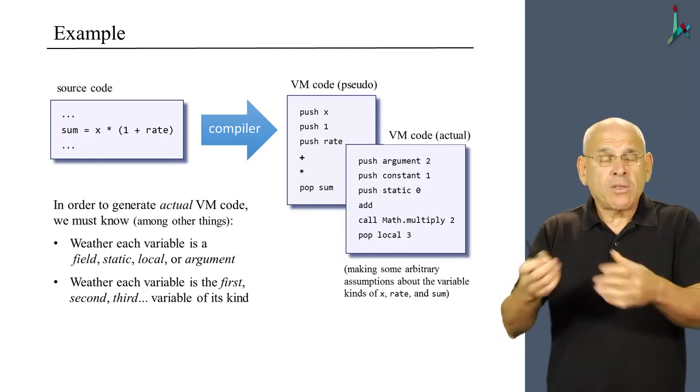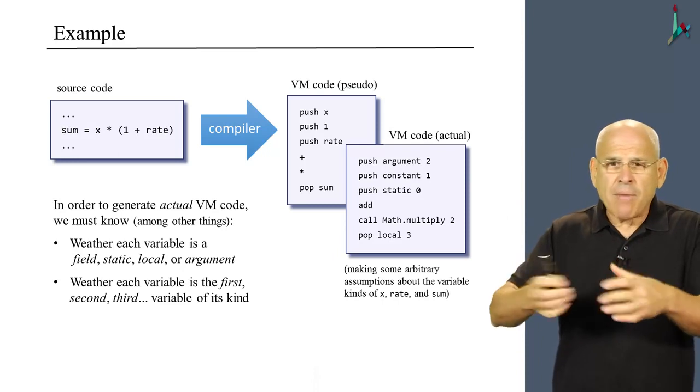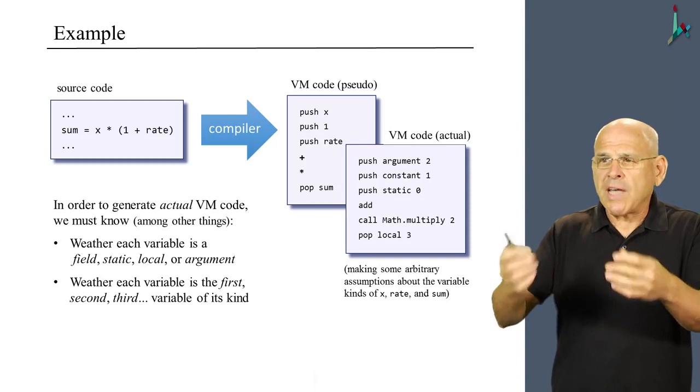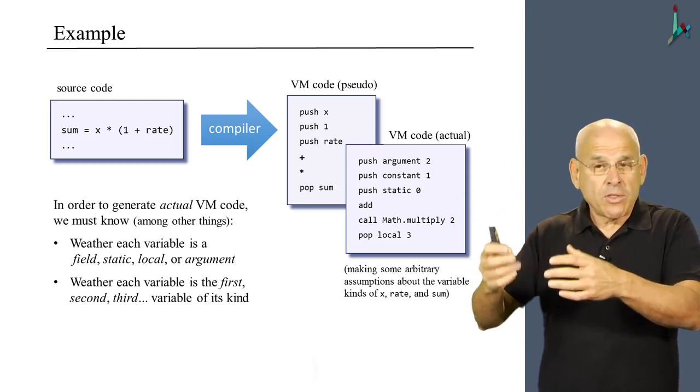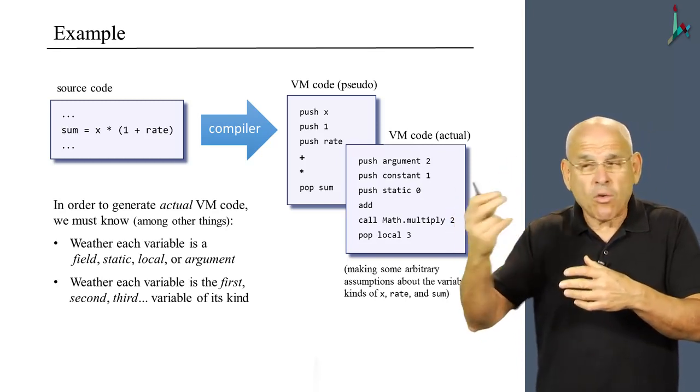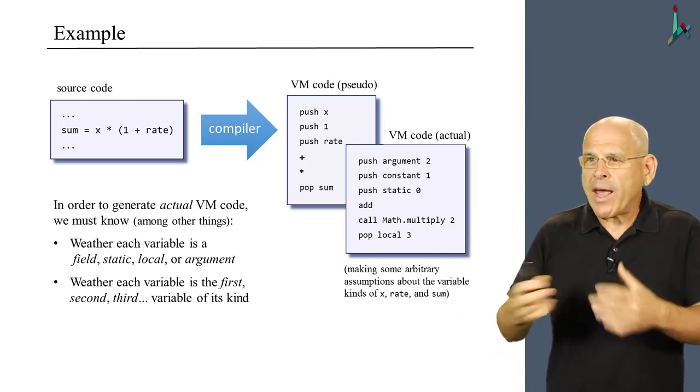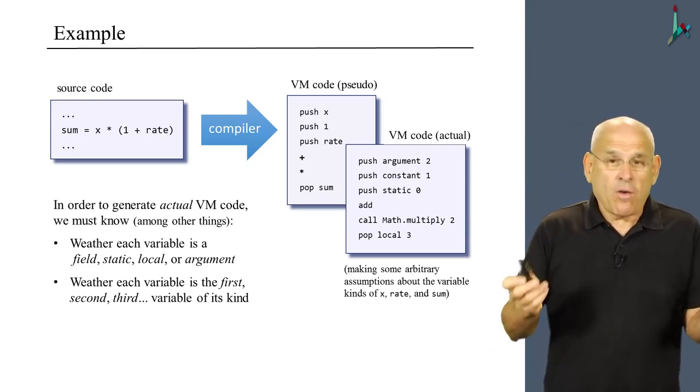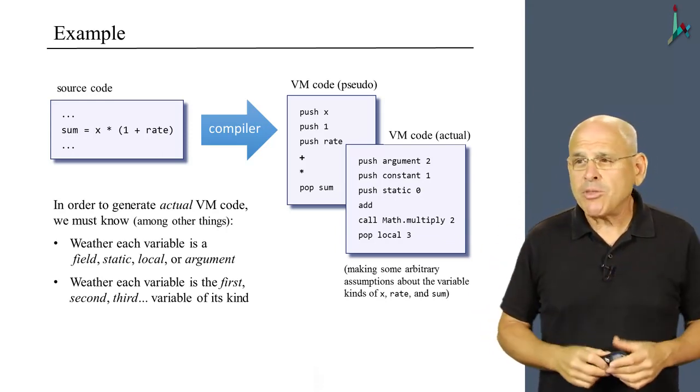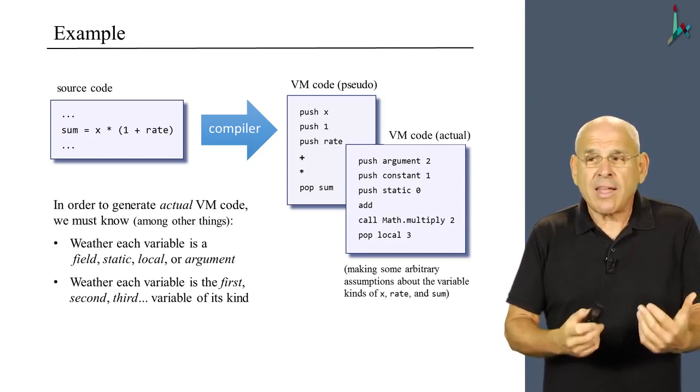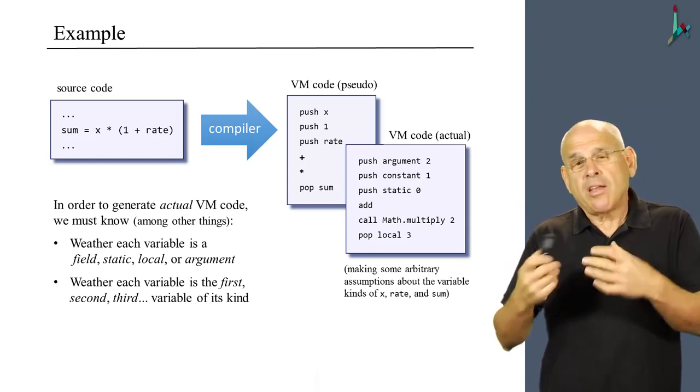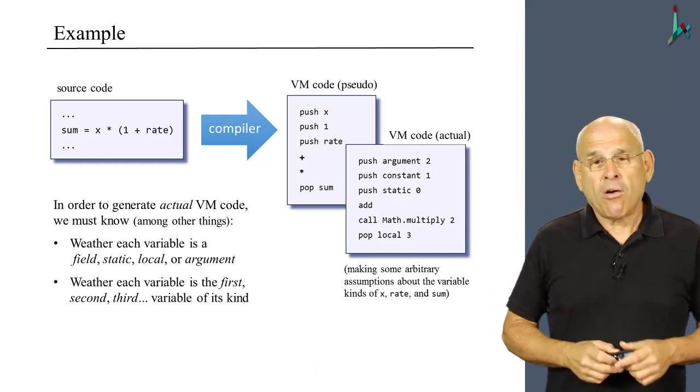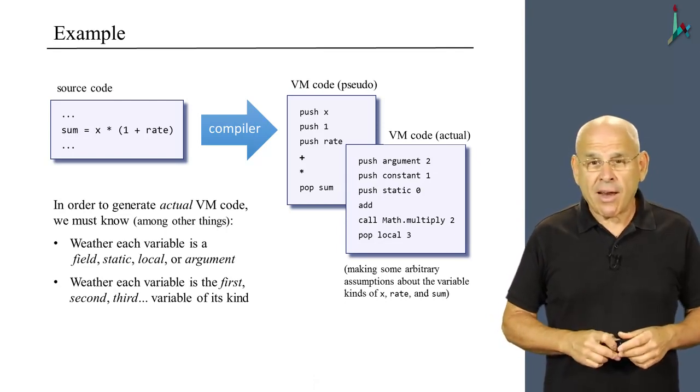And the result will look something like this. Now obviously here I made some arbitrary assumptions. I assume that x was argument 2. In other words, it was the third argument, 0, 1, 2. I assume that rate was the first static variable in this class code. And so on, these are just arbitrary assumptions. But once again, I just want to illustrate the fact that I cannot complete the code generation task unless I know what are the properties of every one of the underlying variables.